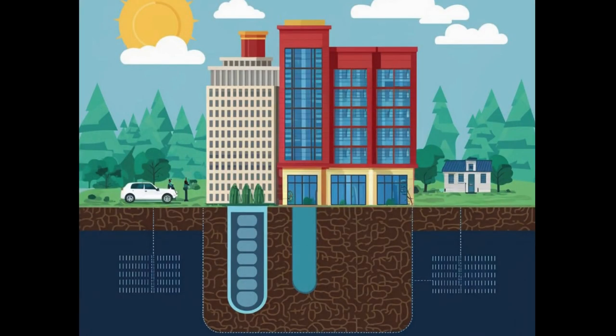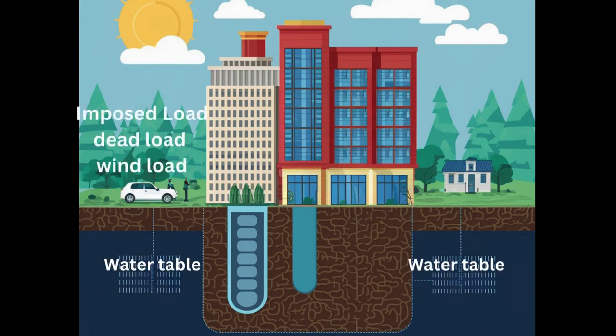The ground or soil works in a similar manner. Just like foam immersed in water, a saturated soil is in its unconsolidated state. The downward force exerted by the building causes expulsion of water from the soil. This weight is known as live or imposed load, dead load, and wind load. Therefore all of these causes the soil to shrink, and this process is called consolidation of the soil.